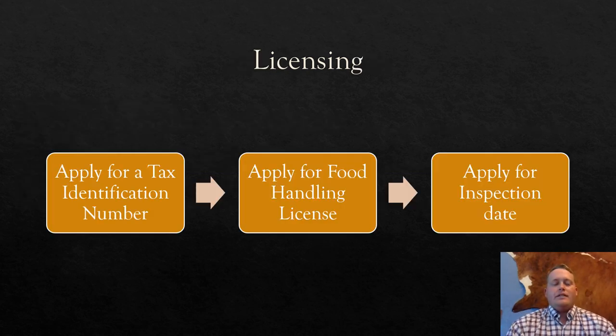So for your licensing, first thing you have to do is get a business tax ID number. This is very simple, costs like 20 bucks. You can go online, you can go to Texas.gov, I believe, and follow the tabs.